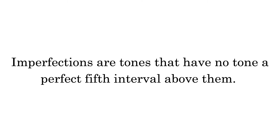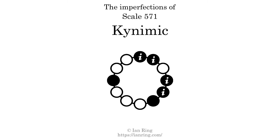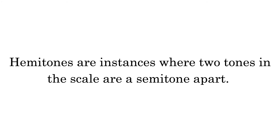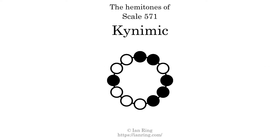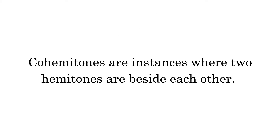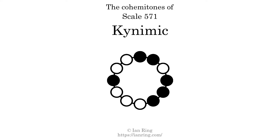Imperfections are tones that have no tone a perfect fifth interval above them. This scale has four imperfections. Hammertones are instances where two tones in the scale are a semitone apart. This scale has three hammertones. Co-hammertones are instances where two hemitones are beside each other. This scale has one co-hammertone.